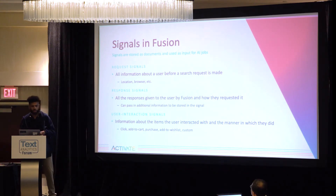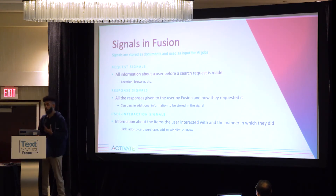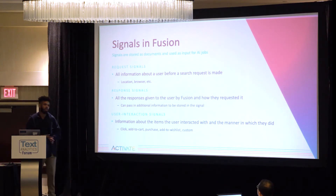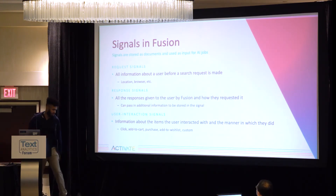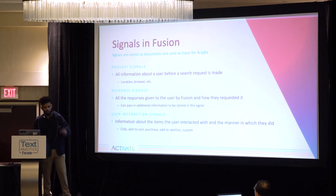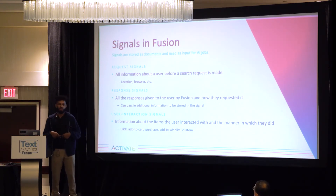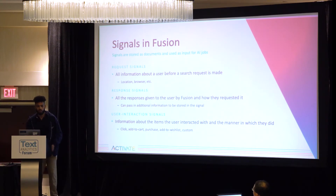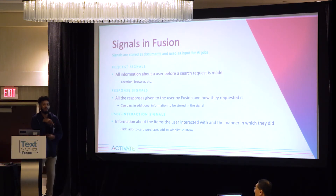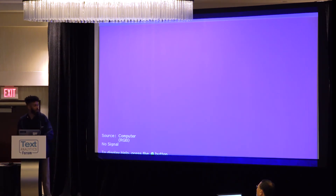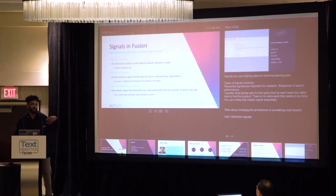There are three categories of signals. A request signal is everything you know about a searcher before the request goes out — so you know their location. For example, I was recently looking for some pants. I spilled oil on the train and wanted replacement pants, but I needed a store where I could buy online and pick up in between the train station and my office. Having that request signal showing my location made it really easy.